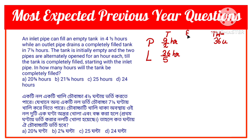We find efficiency using: efficiency = total work ÷ time. For the inlet pipe: 36 ÷ (9/2) = 36 × (2/9) = 8 units per hour. So the inlet pipe can fill 8 units of water per hour.